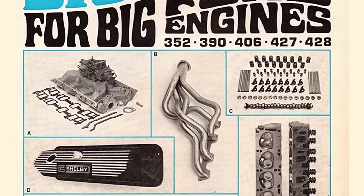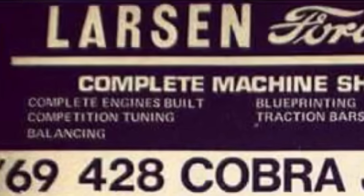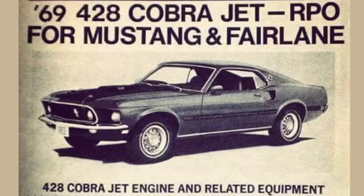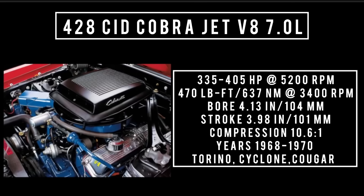Ford made different variations of the 428. In 1968, Ford introduced the 428 Cobra Jet, which featured additional webs cast into the main bearing saddles. Specs: 428 cubic inch displacement Cobra Jet V8, seven liters, good for anywhere between 335 to 405 horsepower at 5,200 RPM, 470 pound-feet or 637 newton meters at 3,400 RPM, with a bore of 4.13 inches and a stroke of 3.98 inches. Compression was 10.6 to 1. The Cobra Jet version was offered from 1968 to 1970 and could be found in the Cougar, Torino, Cyclone, and GT500KR.